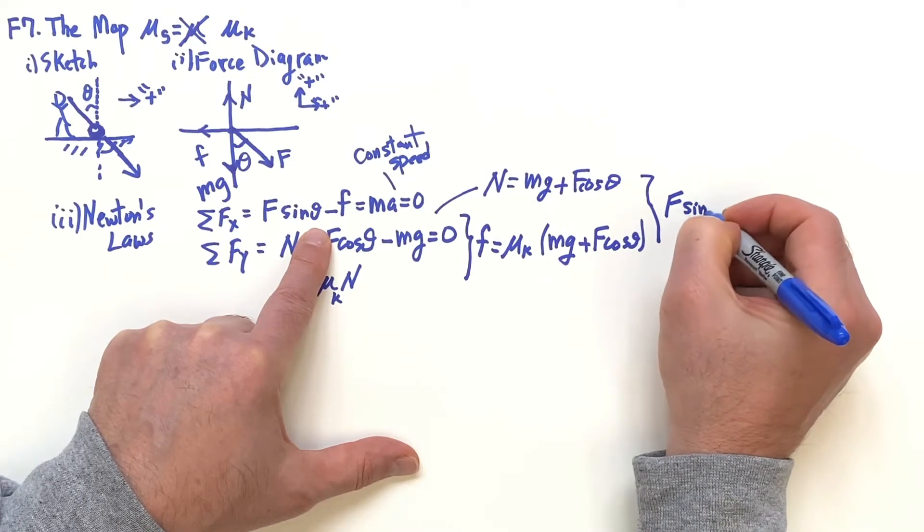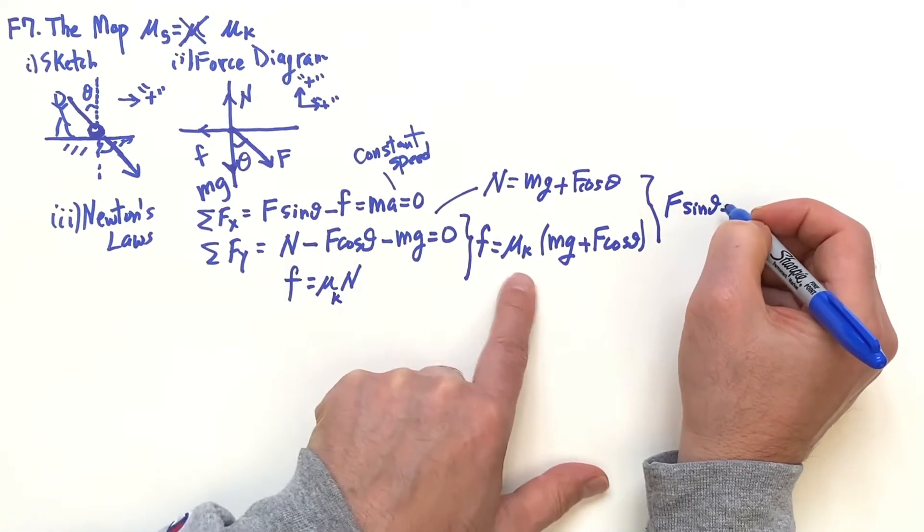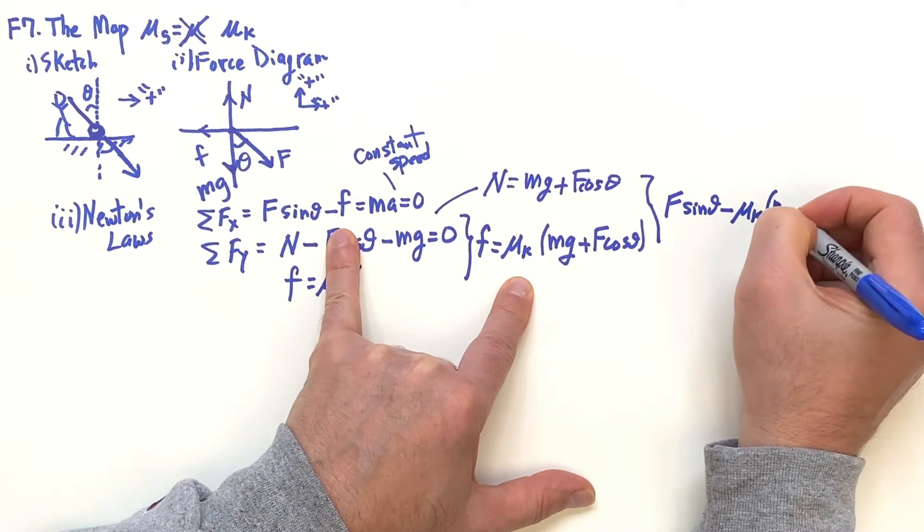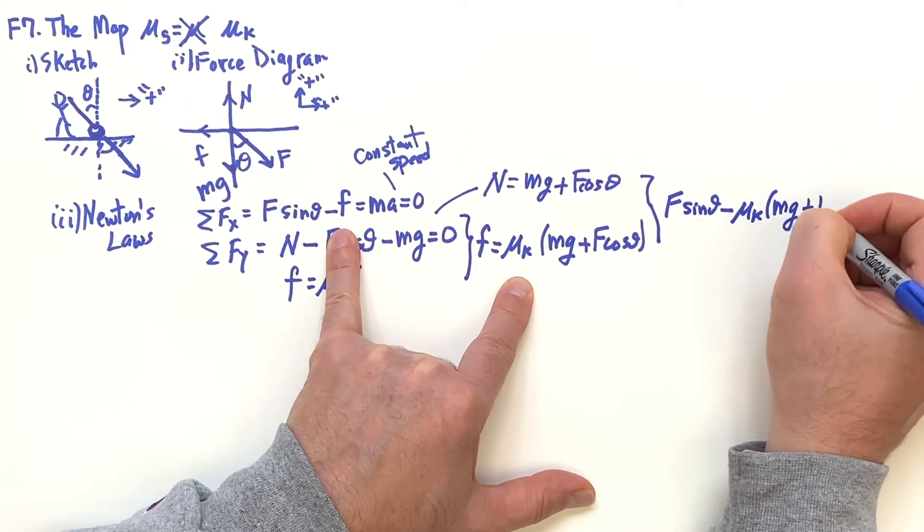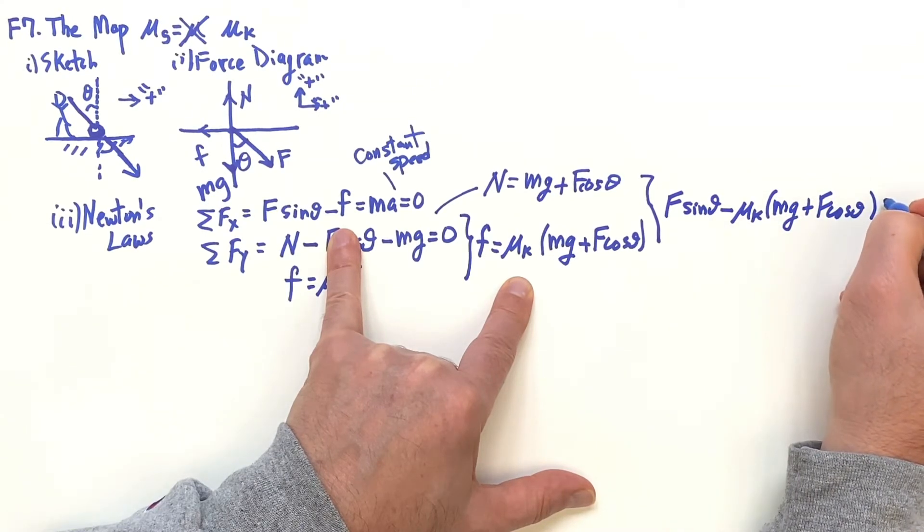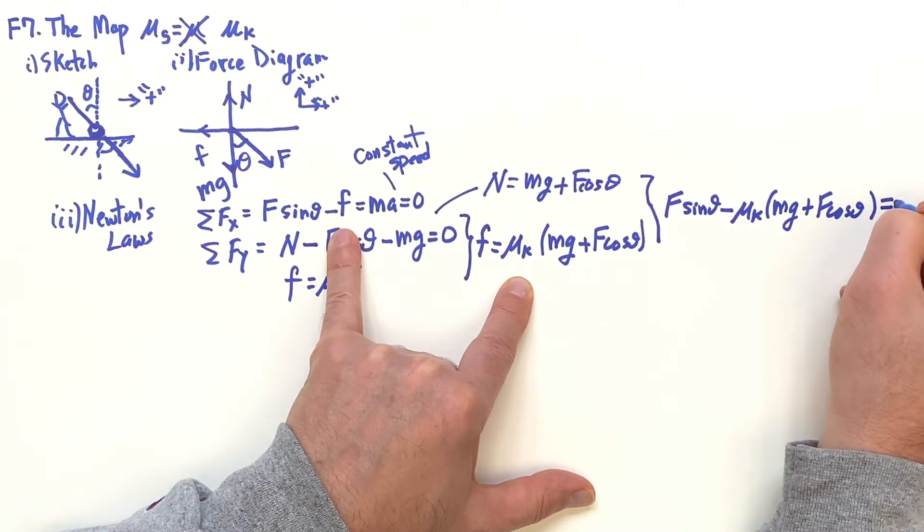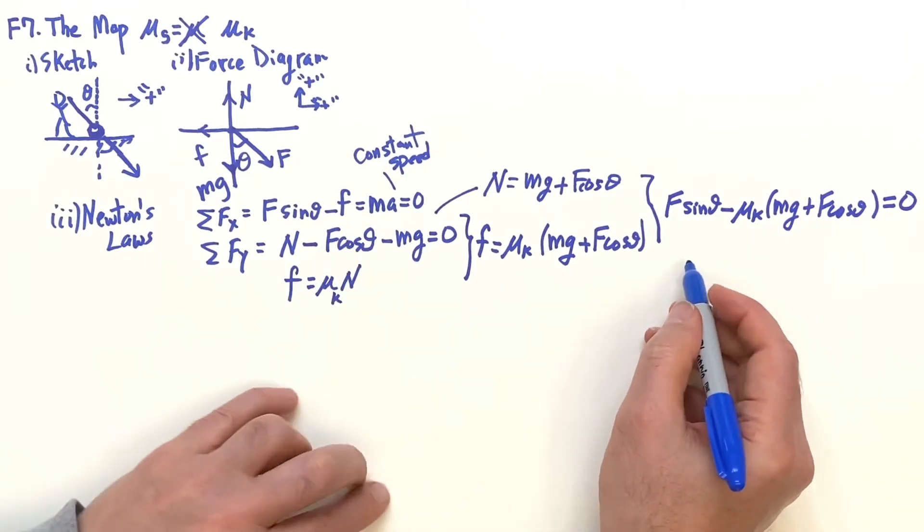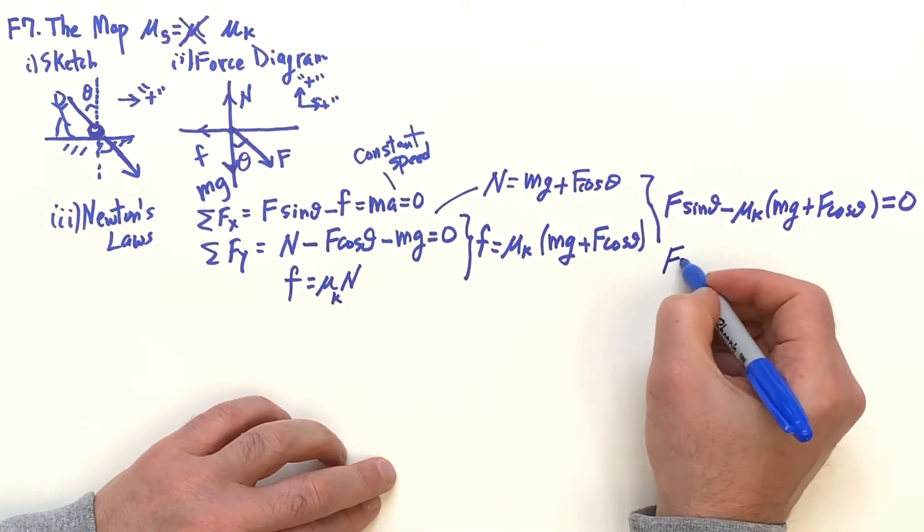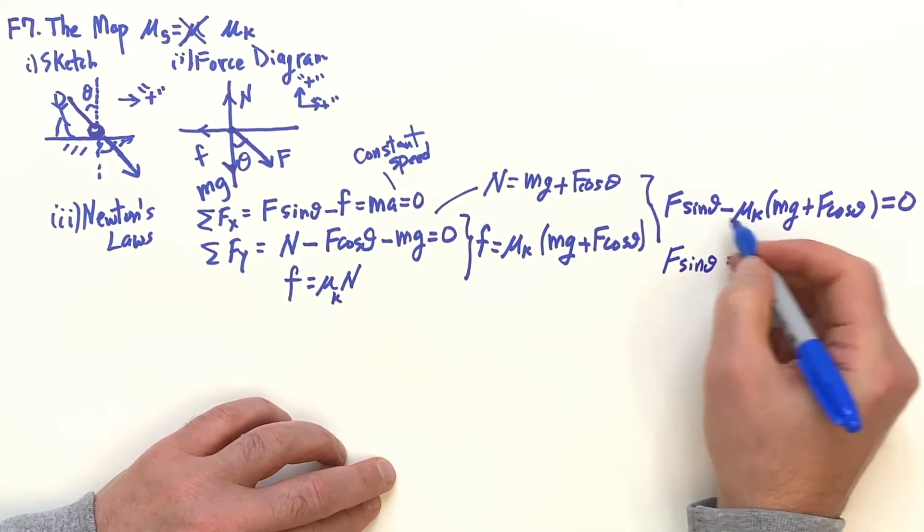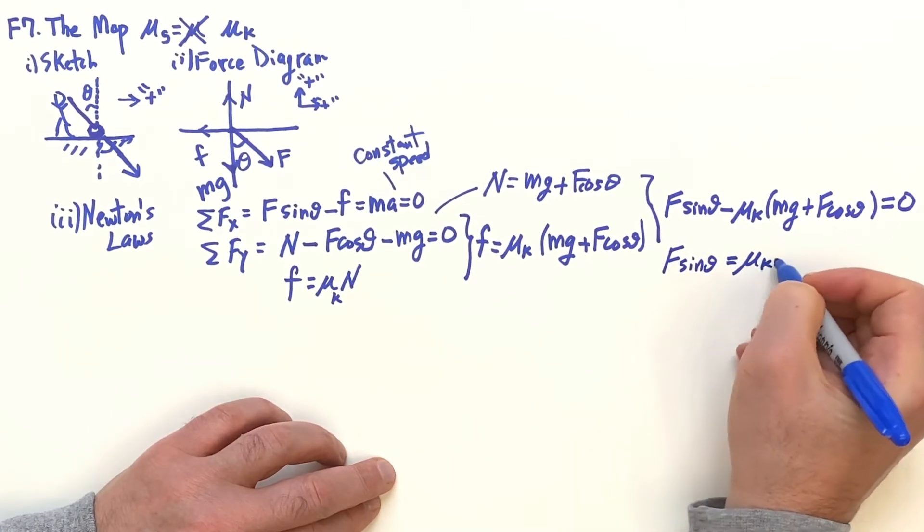The idea is to look at the top equation and put in for the friction. Now this thing goes in there: μ_k(mg + F cos θ), and that's going to be equal to zero. So this means F sin θ is equal to just put this on the other side of the equation for now.